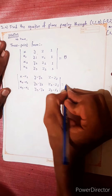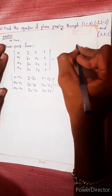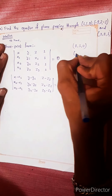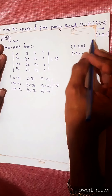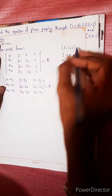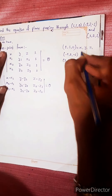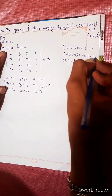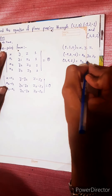Now substituting our three points: the first point is (1, 1, 0), the second point is (2, 2, -1), and the third point is (2, 1, 1).